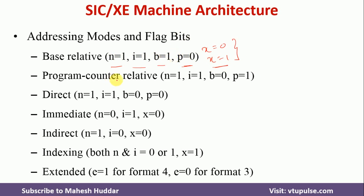In the second case, B is 0 and P is 1. The value of X may be 0 or 1. With N equals 1, I equals 1, and P equals 1, it is program counter relative addressing mode. If the value of X equals 1, it becomes program counter relative indexed addressing mode.